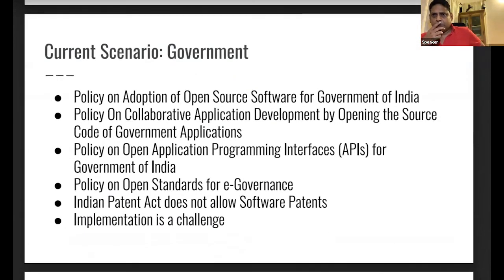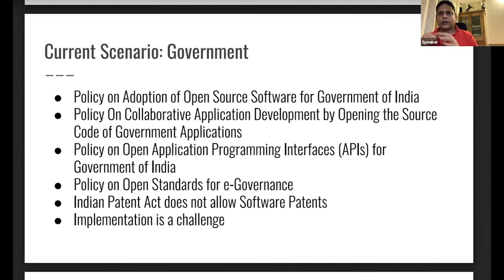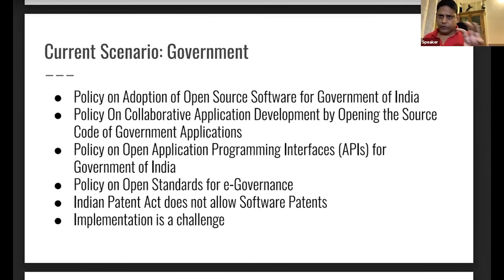When it comes to the government, there are tons of policies. If you're an open source evangelist and you ask for any policy, it is there on paper. But the challenge is that implementation of policies in India is always difficult — that's where the weak link exists. The good news is that there is a policy which says that all things being equal, if there are two different computing applications for a particular e-government use case, the government will go with the open source option. There is also a policy which says that the development of government applications should preferably be done using open source methodologies in a collaborative kind of model.